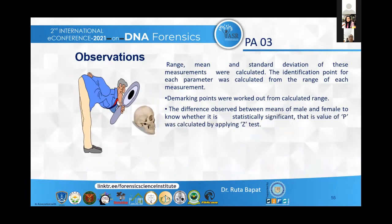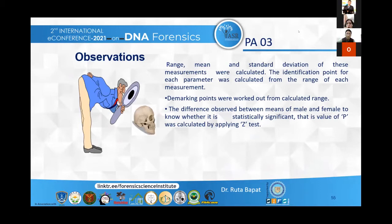After checking all the parameters, the range, mean, and standard deviation of the measurements were calculated. The identification point for each parameter was derived from the range, and demarking points were worked out from the calculated range. Finally, the difference observed between the means of male and female crania was assessed for statistical significance by applying the Z-test to obtain the p-value.